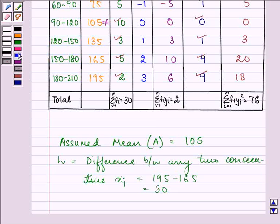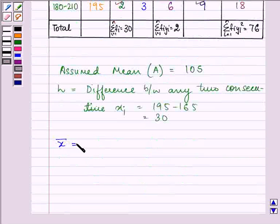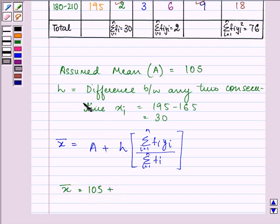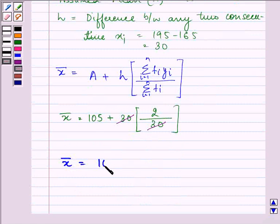So we have now the mean. The formula for mean in shortcut method when we are given continuous series is a plus h multiplied by summation fi yi from i equals 1 till n divided by summation fi. So on substituting the value, we know the value of a is 105, the value of h is 30. Then we have summation fi yi as 2 divided by summation fi that is 30. So on simplifying we have the mean is equal to 107.